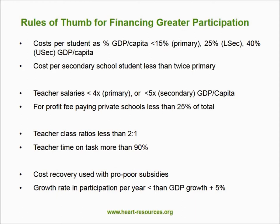It is not appropriate to apply flat-rate fees across a population because these will exclude. Pro-poor subsidies are necessary, and services which are free at the point of service delivery are essential if expanded access is to be equitable. The growth rate of participation in secondary schooling should not be more than GDP growth plus perhaps 5%, as sustaining higher rates of growth challenges the capacity of systems to grow, adapt, maintain quality, and supply schools with an adequate number of trained teachers.